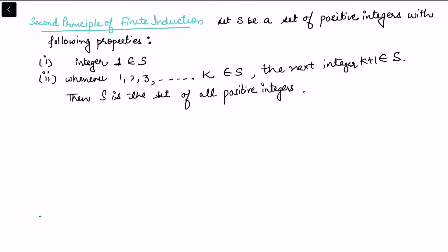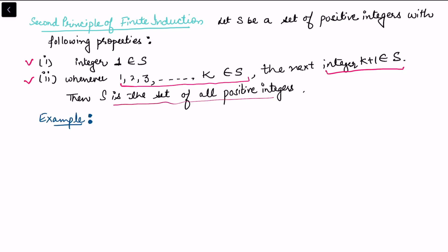The Second Principle of Finite Induction is similar to the first. It says let S be the set of positive integers with the following property: first, integer 1 belongs to the set; second, whenever 1, 2, 3 up to k all belong to S, the next integer k plus one also belongs to S. If both conditions hold then S is the set of all positive integers.